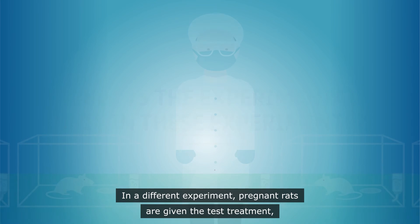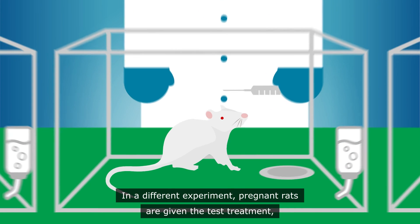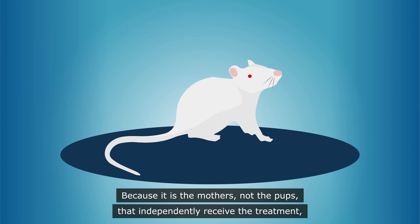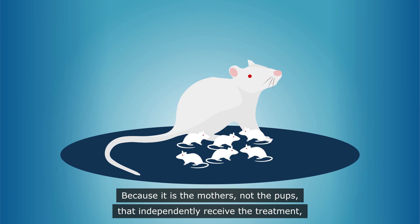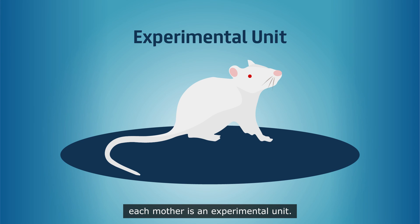In a different experiment, pregnant rats are given the test treatment, but it is the effect on the pups that is studied. Because it is the mothers, not the pups, that independently receive the treatment, each mother is an experimental unit.